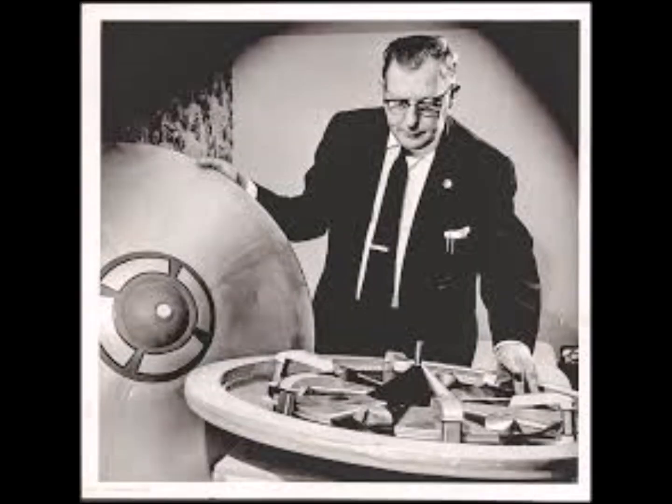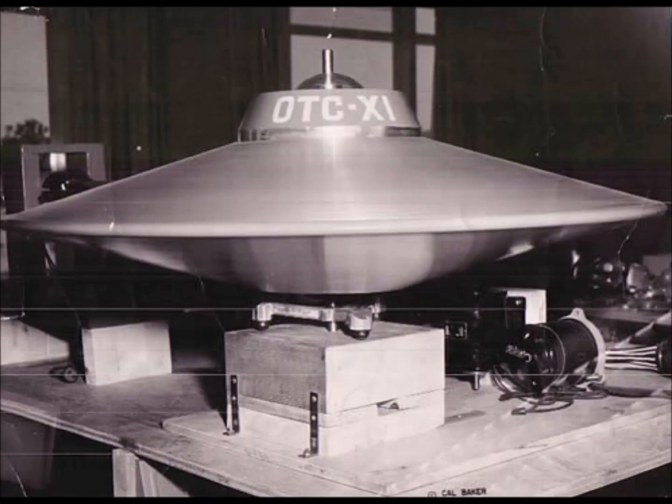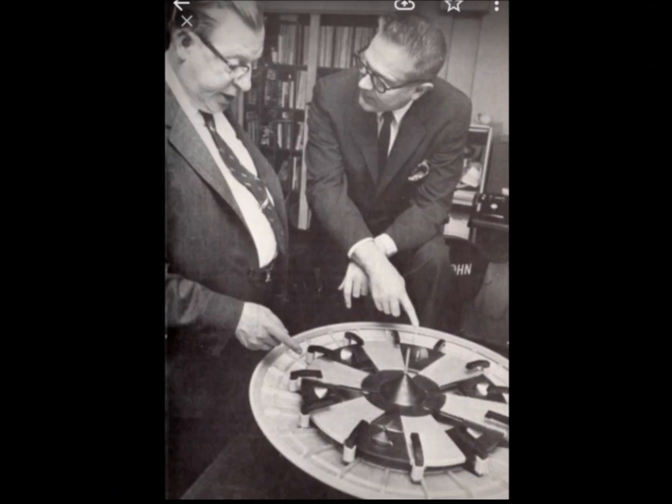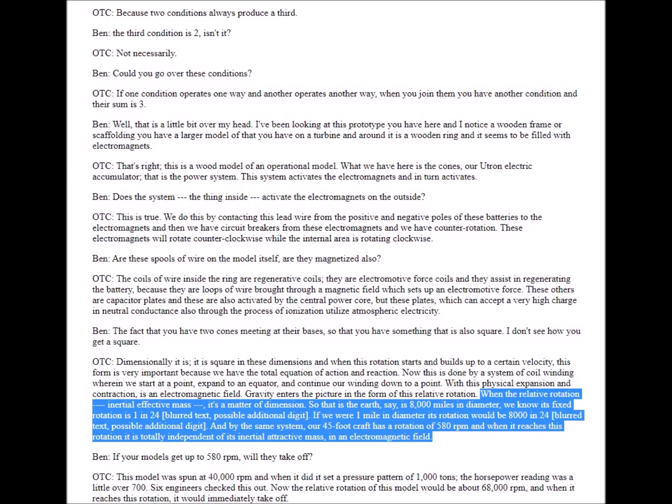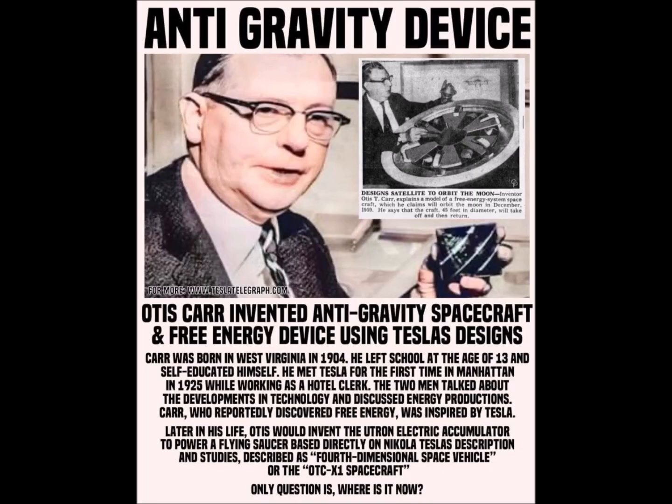It is one of the core principles of Otis T. Carr's flying saucer propulsion concept. Though as far as I can tell, Carr himself never used this particular term when explaining his ideas. He did however mention that the angular velocity of a disk needed to overcome gravity would be related to the disk's diameter with higher velocities needed as the diameters decrease and slower velocities as diameters increase. We will discuss Carr's proposed system in greater detail in a separate video.